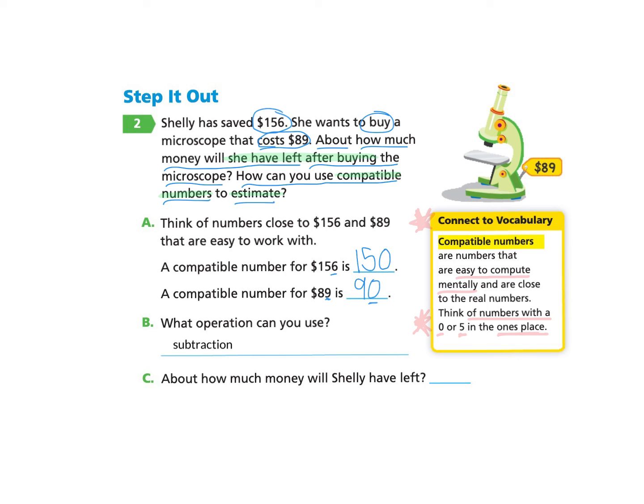So we can use our compatible numbers 150 to take away 90, the amount for the microscope, and we can compute these numbers more easily mentally. So if you'd like to pause and try that and come back, you will find that she will have about $60 left.